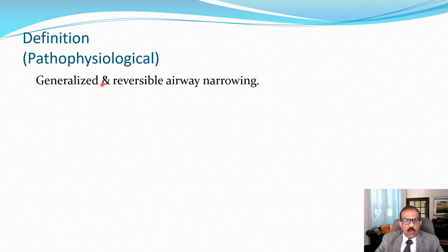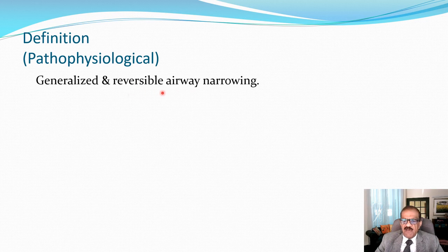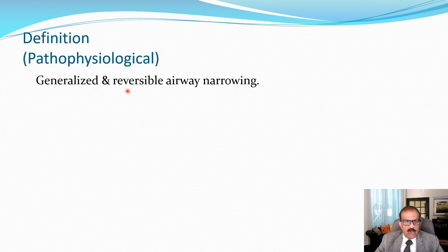The underlying disease process is generalized bronchospasm, which is evident as the presence of generalized ronchi. Ronchi are whistling sounds not present in a normal healthy person — only when there is marked airway narrowing do you get this abnormal sound called ronchi.